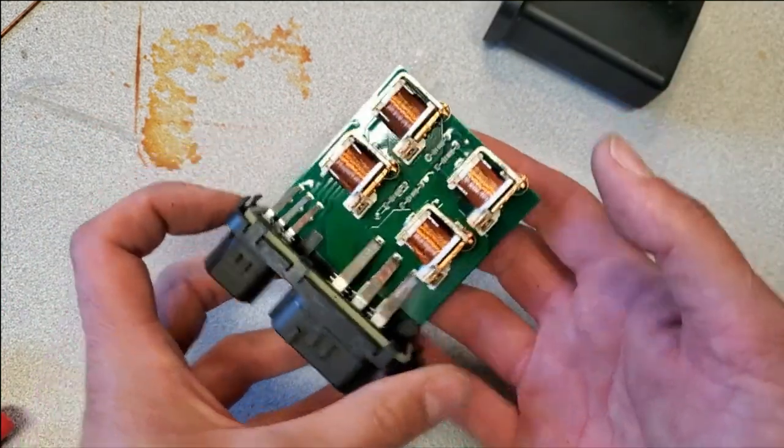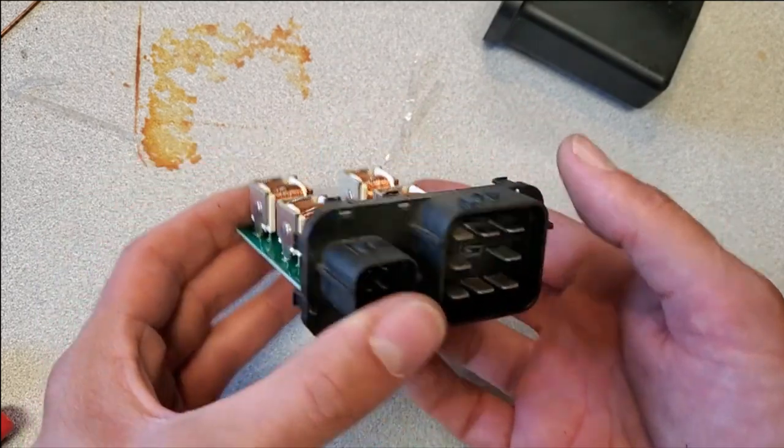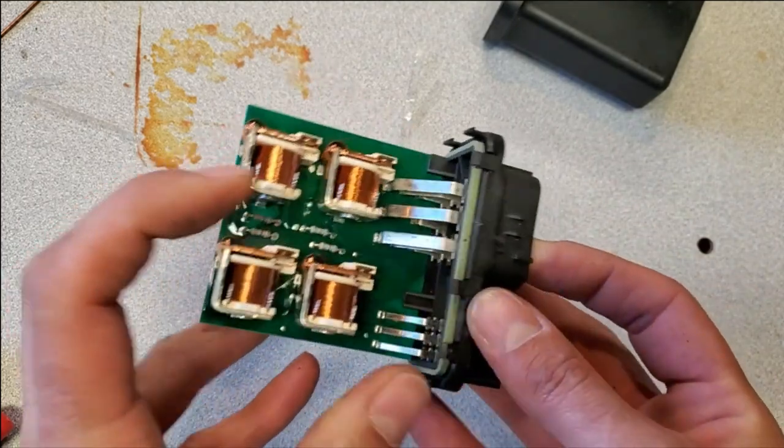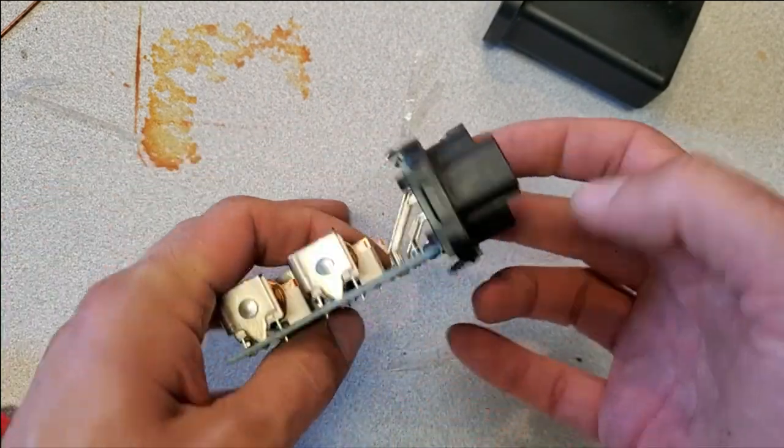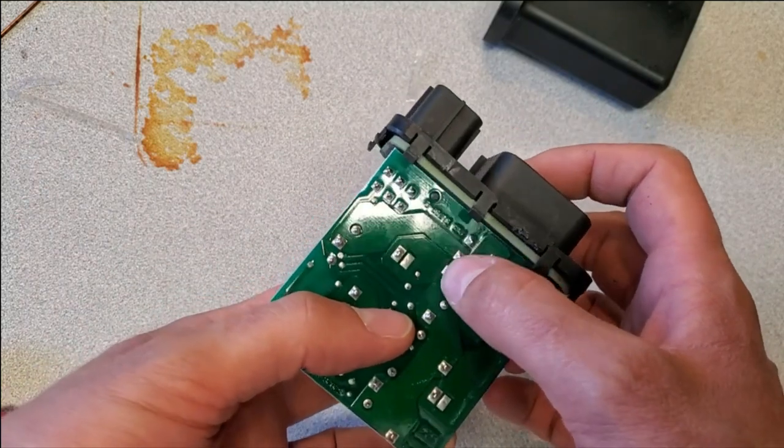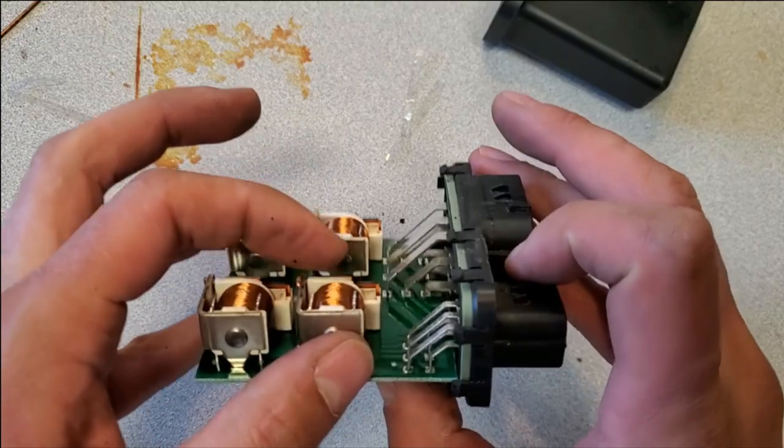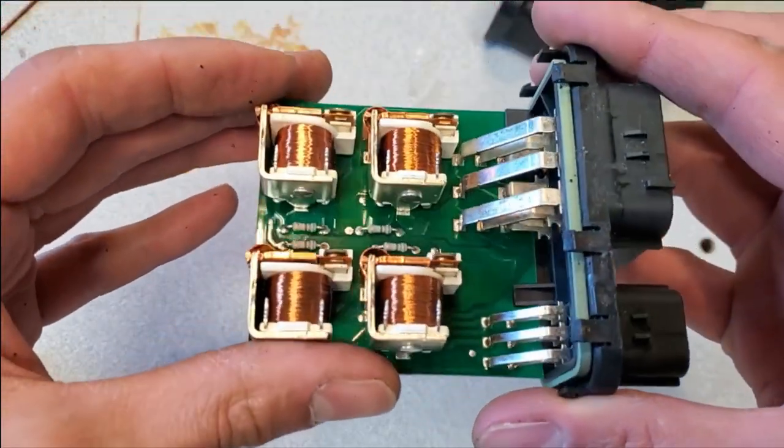I'm gonna go ahead and pull it apart and see what we got. As I mentioned before, it is just four relays in a box, but let's find out what happened here. The pin that I'm looking at is this pin, which is this trace. If we follow it to the bottom here, it's gonna be this pin, so it's involved with this relay.